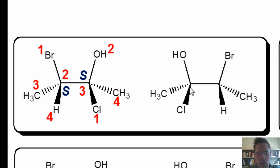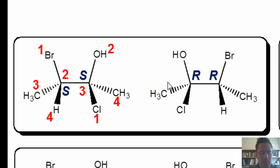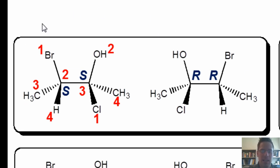Now if we go through the same process with the molecule at the right — which I'll let you attempt on your own — you'll see that it gives an R and R configuration. So the question is: these two molecules have the exact same bonding order but differ only in the three-dimensional shapes around each stereocenter. The molecule at left is an SS molecule and the molecule at right is an RR molecule. Because they are exact opposites, they are indeed enantiomers.